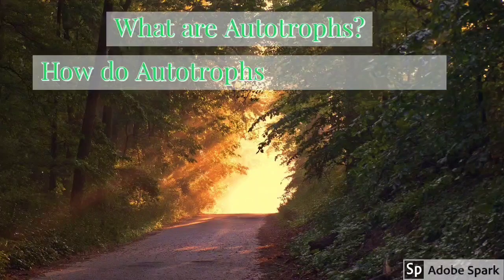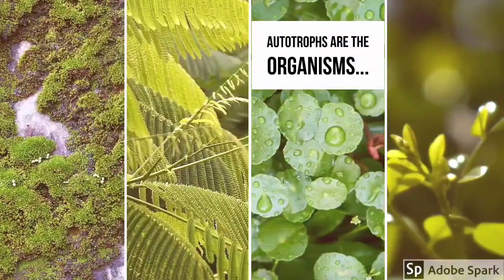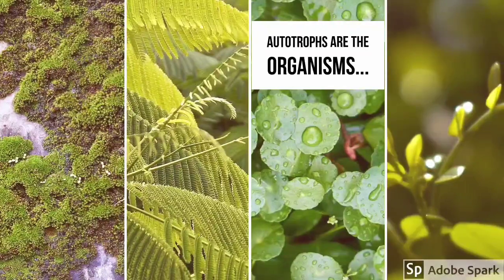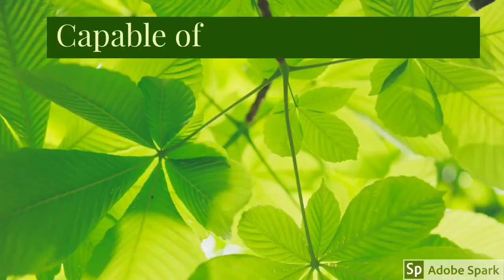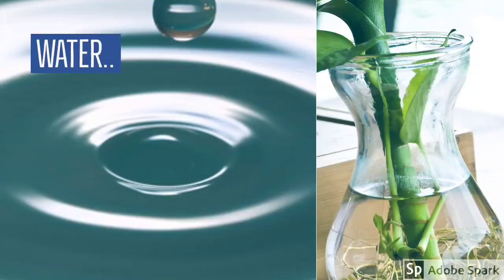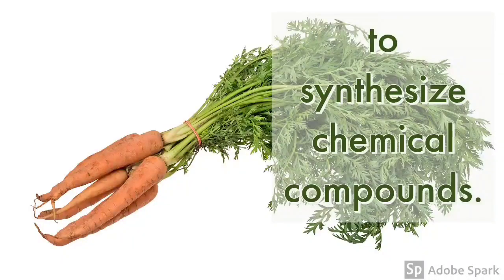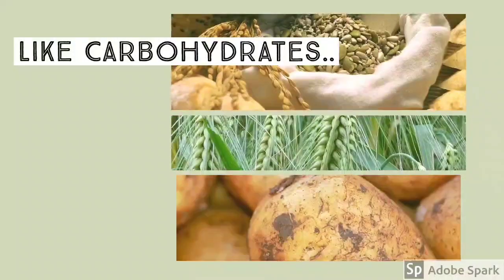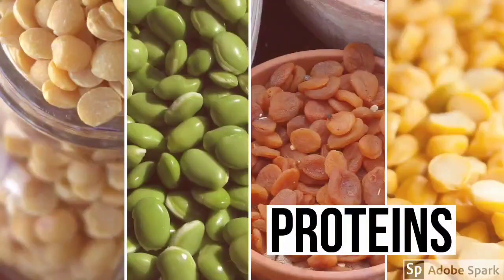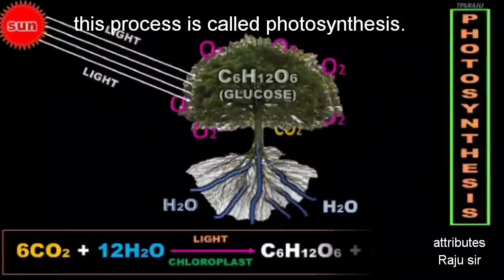How do autotrophs get their food? Autotrophs are organisms capable of using light energy, water, and carbon dioxide to synthesize chemical compounds like carbohydrates, proteins, and lipids. This process is called photosynthesis.